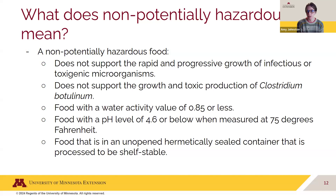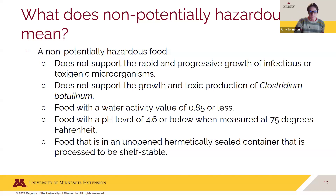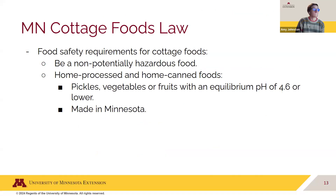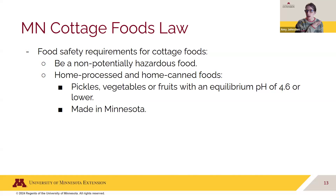That pH of 4.6 or below is the sweet spot where pathogens that can cause foodborne illness aren't able to survive or grow. That pH also prevents Clostridium botulinum spores from germinating into vegetative cells and then producing a toxin. Non-potentially hazardous foods could also be a food in an unopened, hermetically sealed container that is processed to be shelf stable. For home processed and home canned foods, they can be pickles, vegetables or fruits with an equilibrium pH of 4.6 or lower, and made in Minnesota.